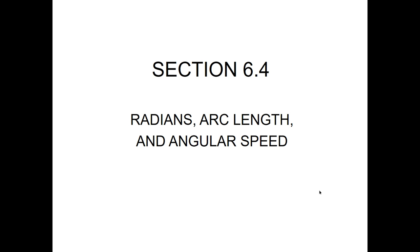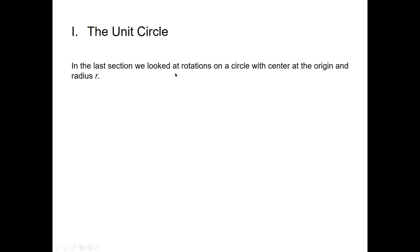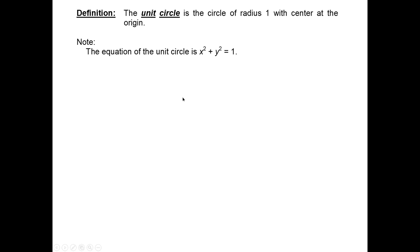This is section 6.4 of Lee College Trig, looking at radians, arc length, and angular speed. The first topic is the unit circle. In the last section we looked at rotations on a circle with center at the origin and radius r. Now we look at a special circle called the unit circle — unit means one. The unit circle is the circle of radius one centered at the origin, with equation x squared plus y squared equals one.